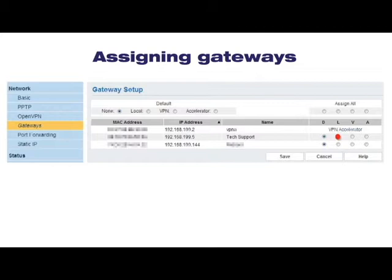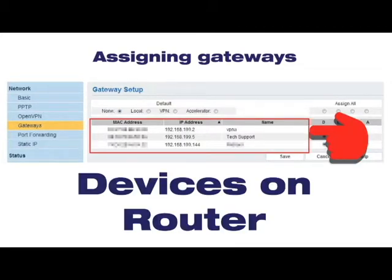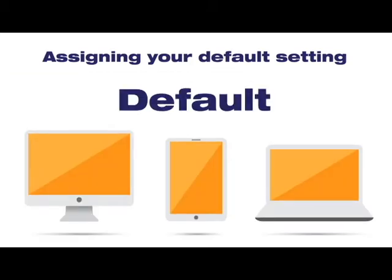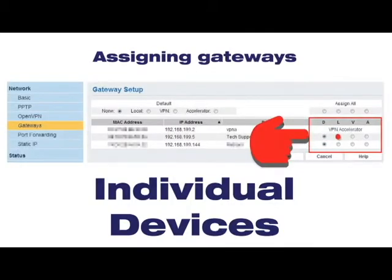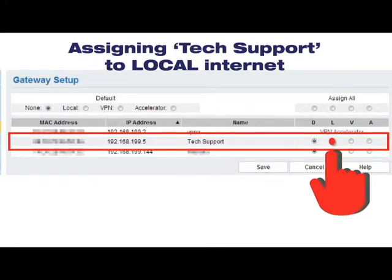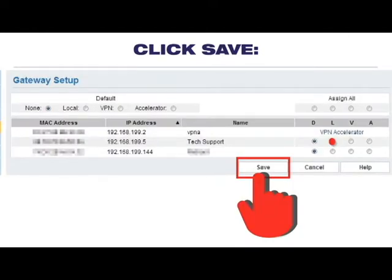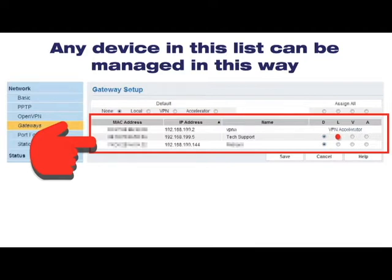There you will see all of your devices currently connected to the router. Start by assigning your default setting. Any devices added to your network will automatically be put on the default setting. For individual device settings, click on the radio button next to that device in the gateway column of your choosing. For instance, here we are assigning tech support to local internet by clicking in the circle under the L column. Click Save. Any device in this list can be managed in this way.